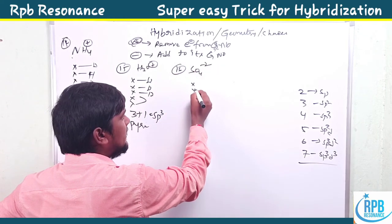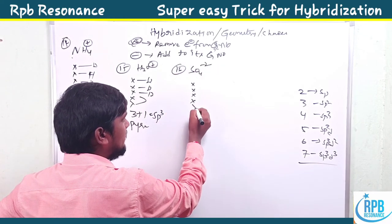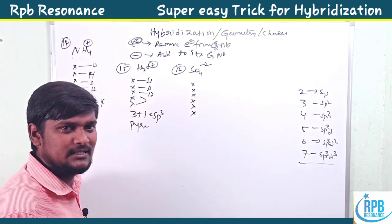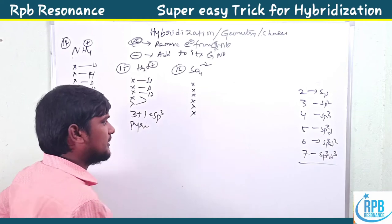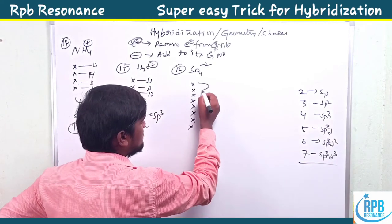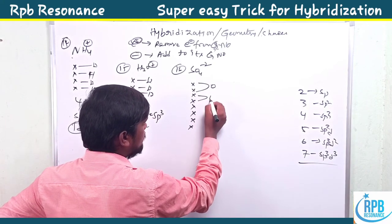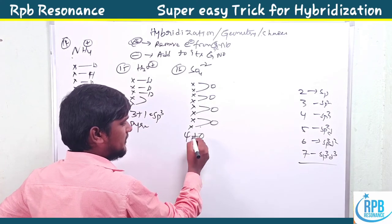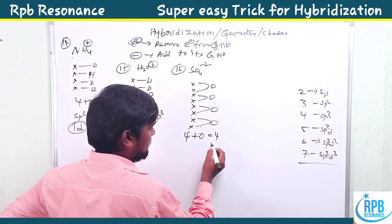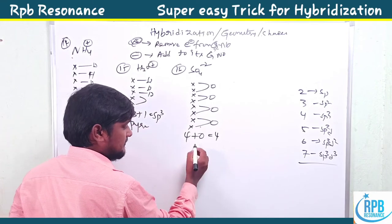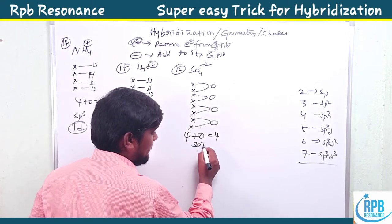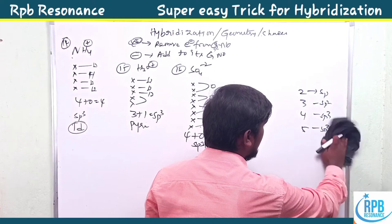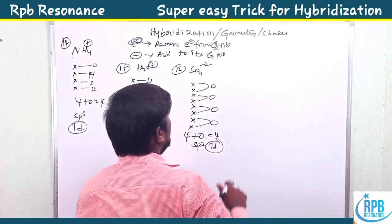For SO4²⁻, sulfur's group number is six; with a 2- charge, add two electrons, giving eight. With four oxygens: four sigma bonds plus zero lone pairs — four plus zero equals four — sp3 hybridization, tetrahedral.